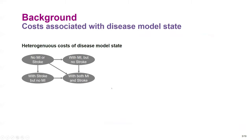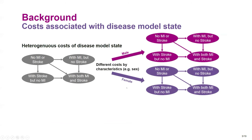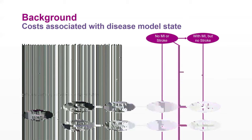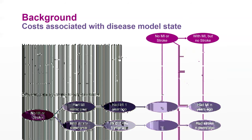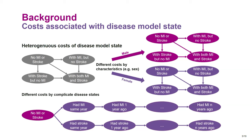In this section, I will focus on the cost of the disease model state — estimating cost associated with each model state. Specifically, we want to understand heterogeneous cost of disease model states. We have four model states to estimate, and we know that costs may differ by people's characteristics such as sex. Men generally have higher costs in corresponding states.